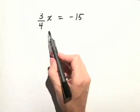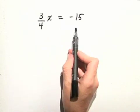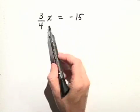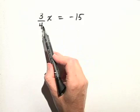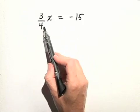Let's solve the equation 3 fourths x is equal to negative 15. Now notice there's a coefficient in front of x which happens to be a fraction.